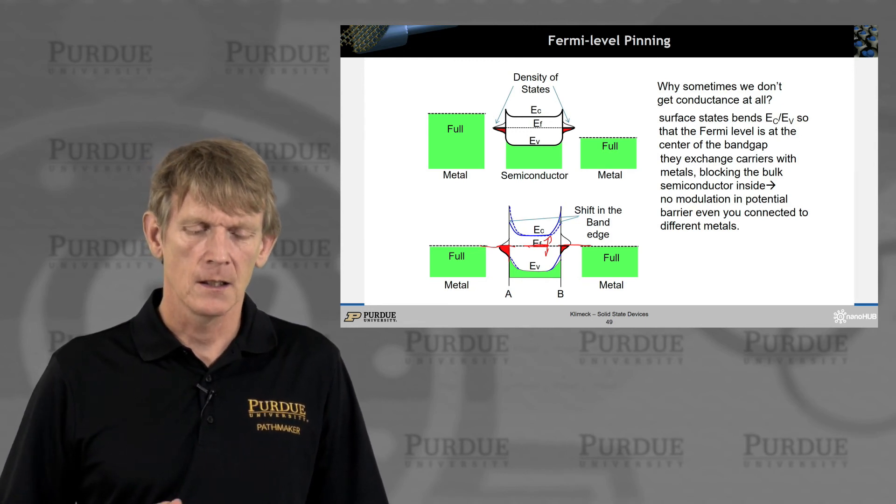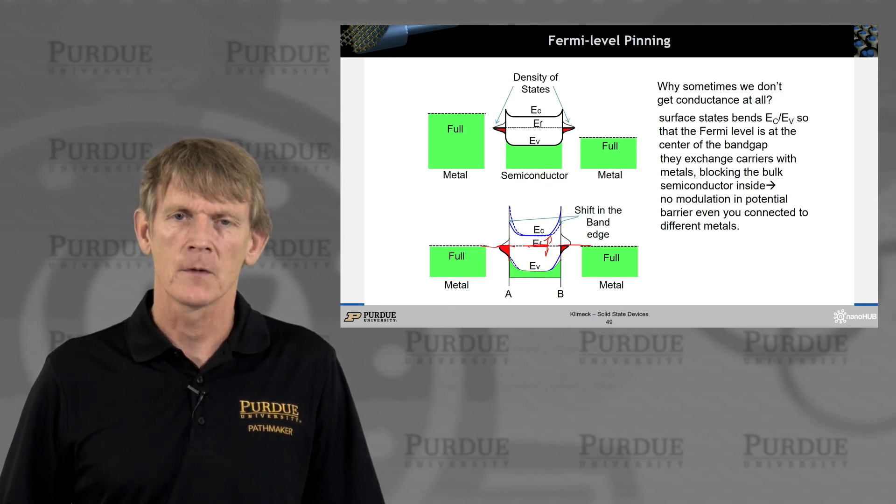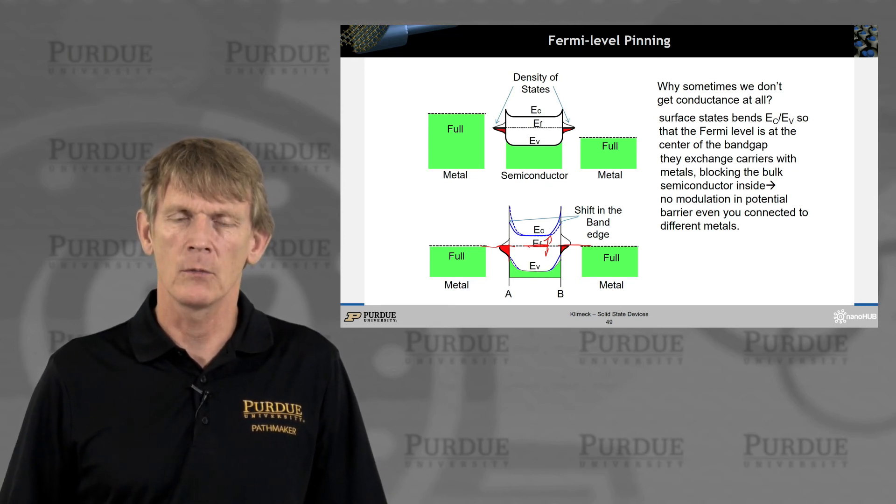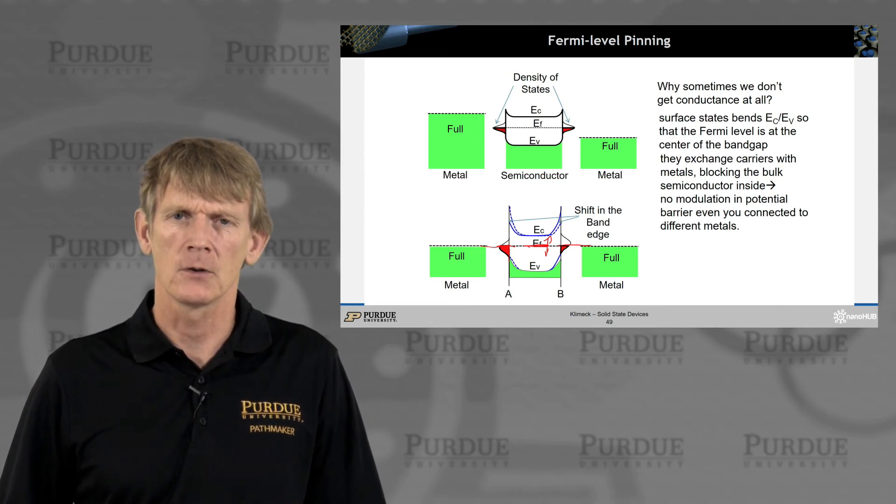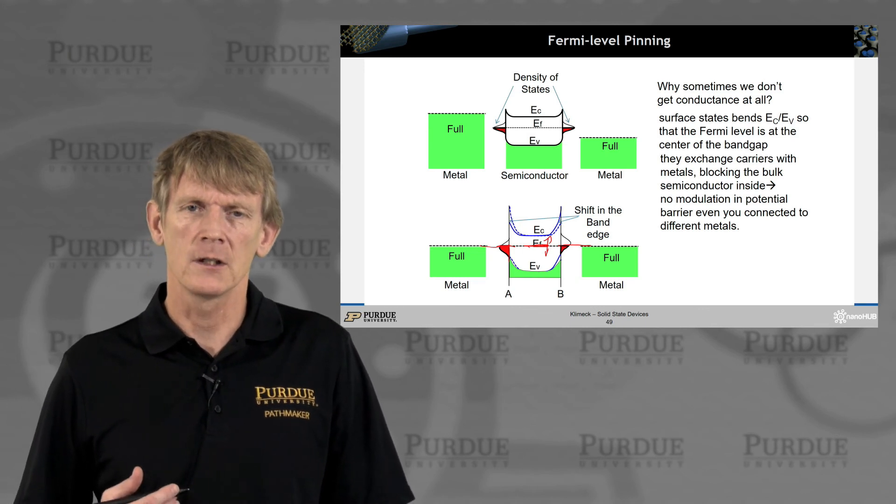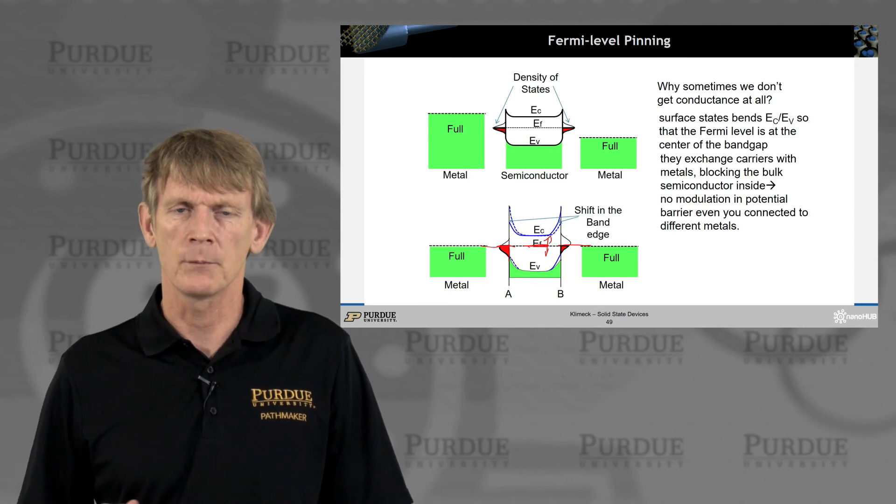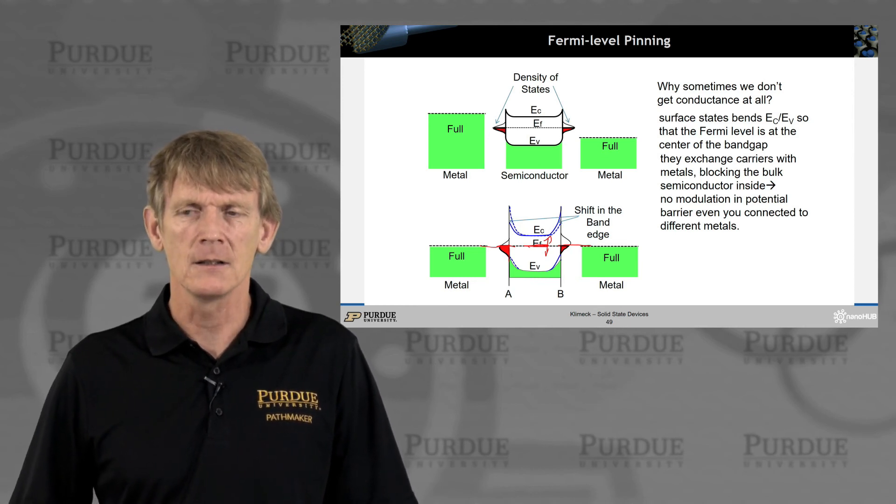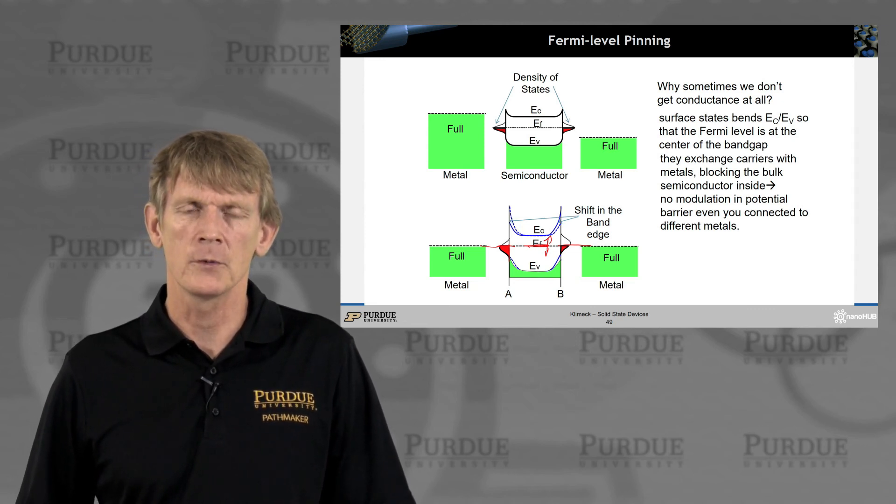So, these Fermi-level, pin Fermi-level states really screen off any modulation you might want to, can achieve on your semiconducting device. So, when you develop a new process or a new material, a typical discussion is, what are you doing about Fermi-level pinning? How do you unpin Fermi-levels? That's still a very common discussion in the semiconductor research community.